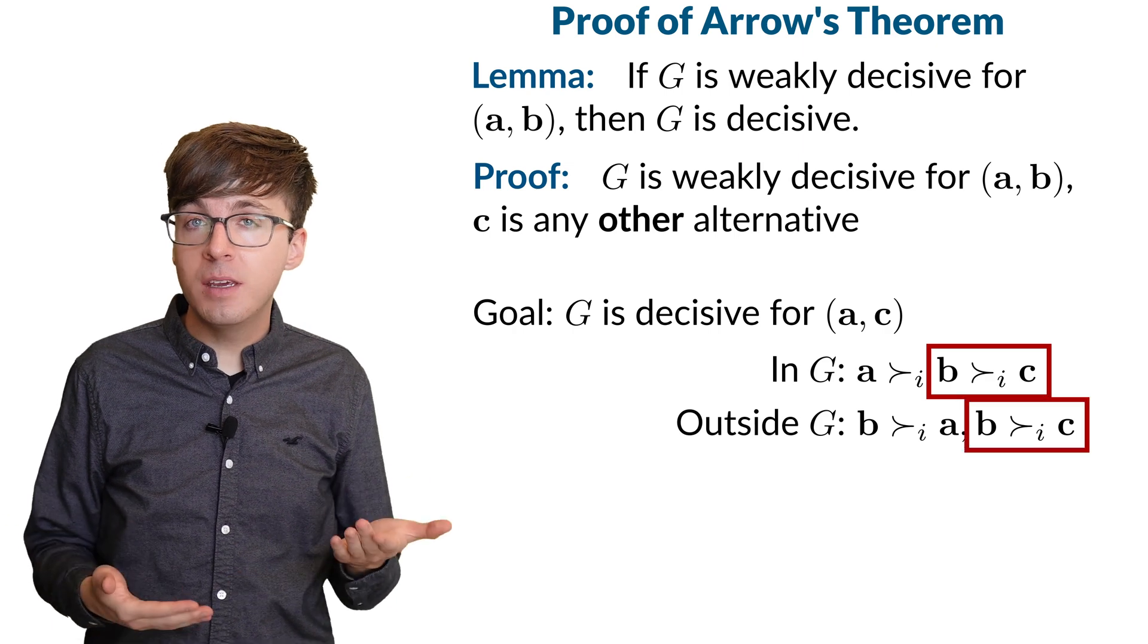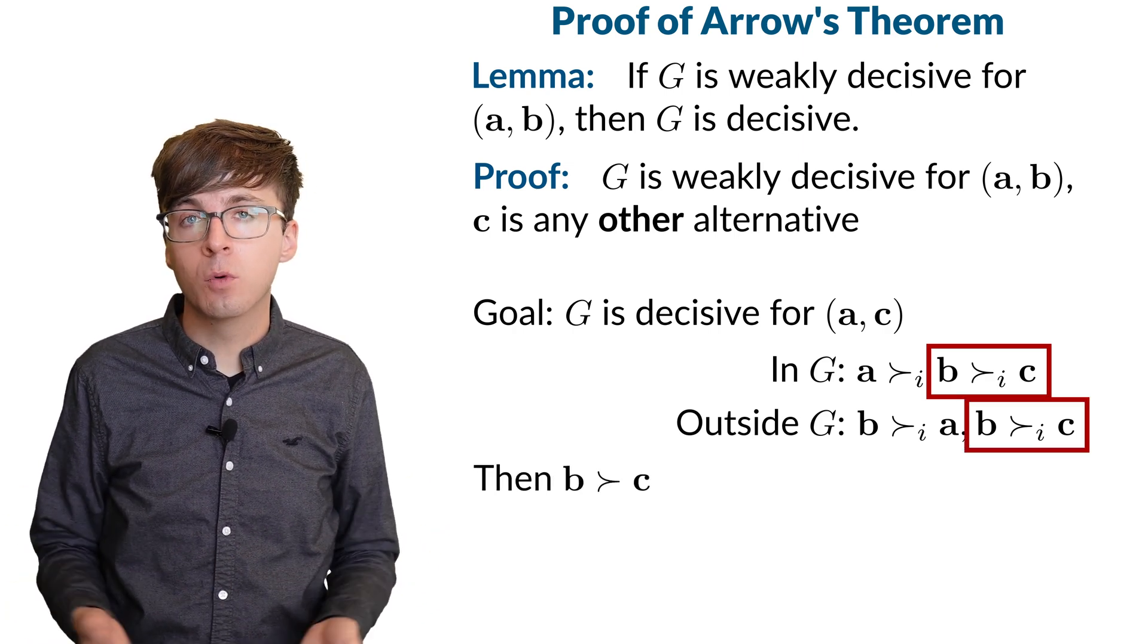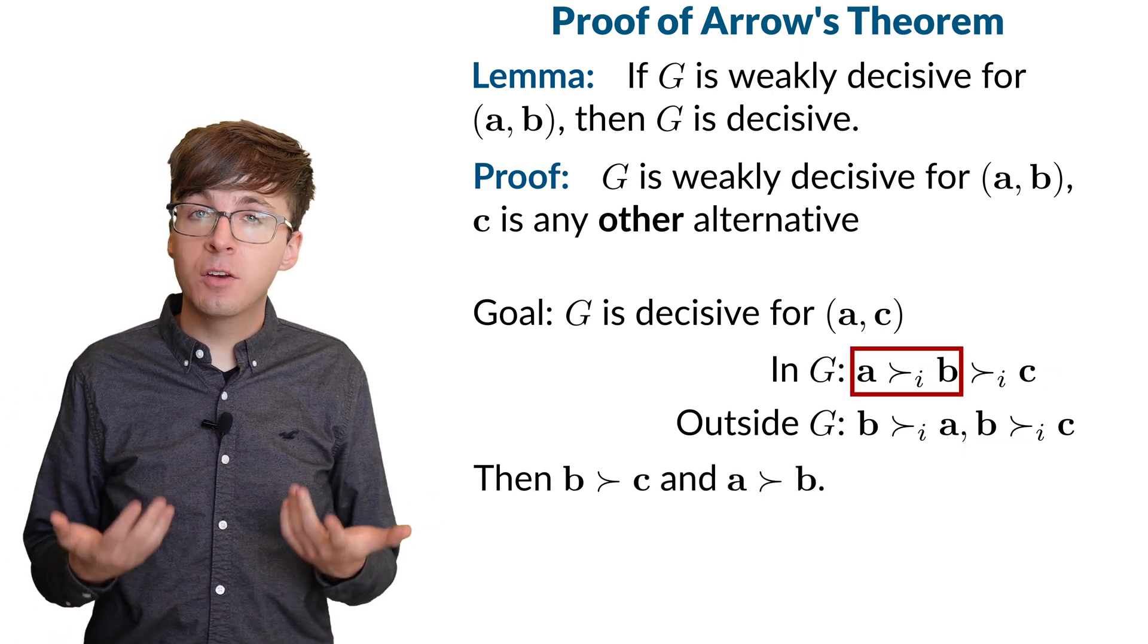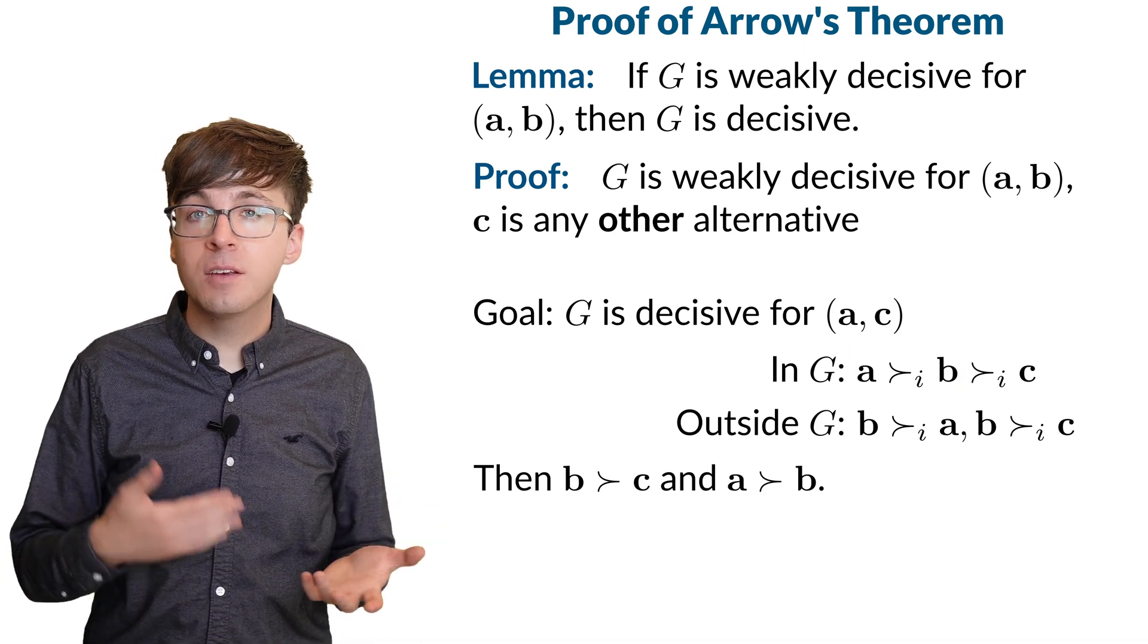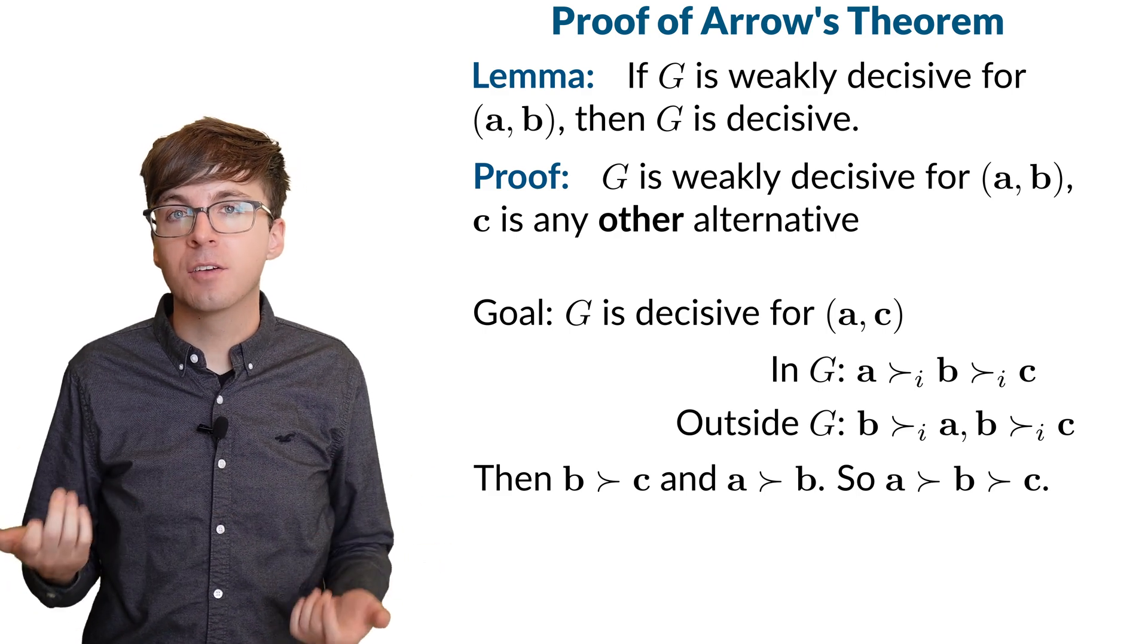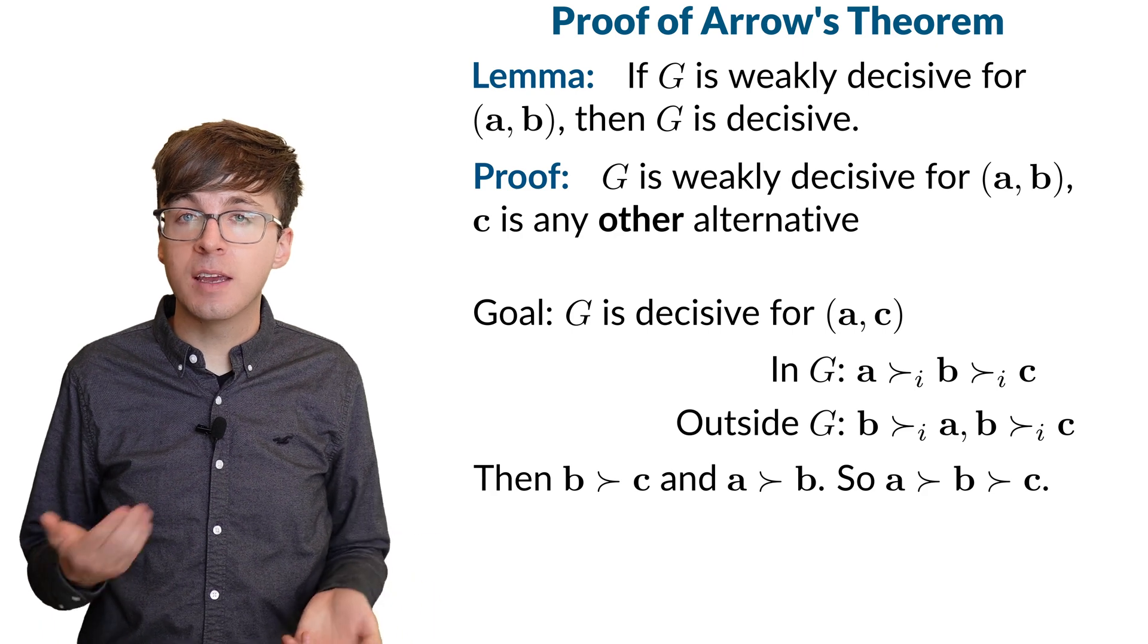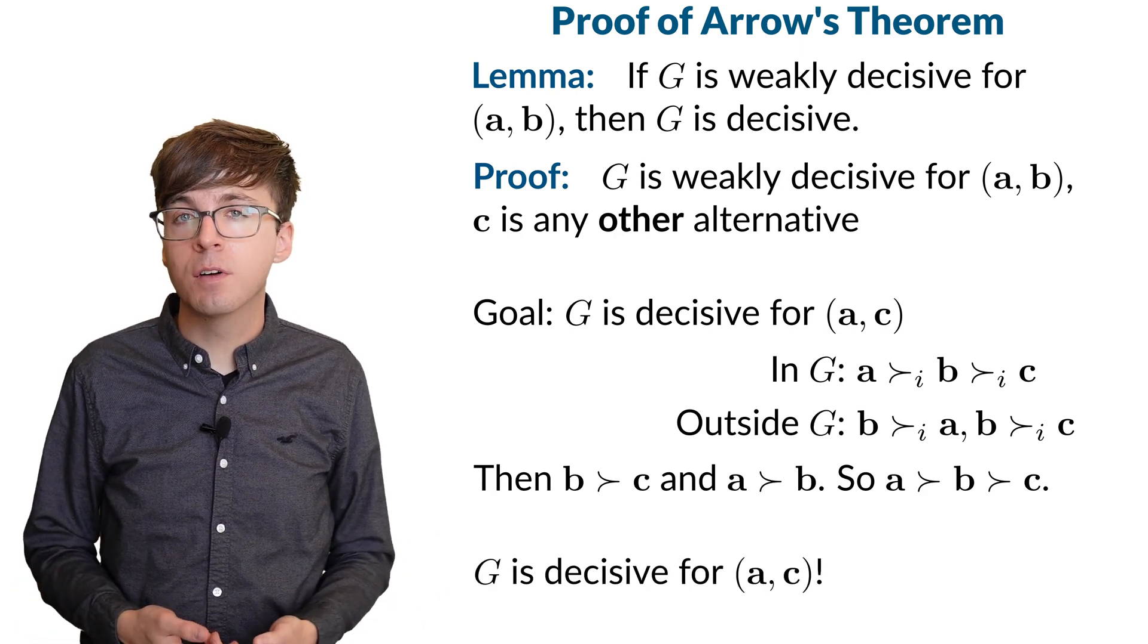Now everyone prefers B to C. So B will rank higher than C in the group's order. And we know that A ranks higher than B because the coalition is weakly decisive for AB. So A is higher than B and B is higher than C, and so A is higher than C. As long as the coalition unanimously prefers A to C, then A will rank higher than C in our social welfare function.